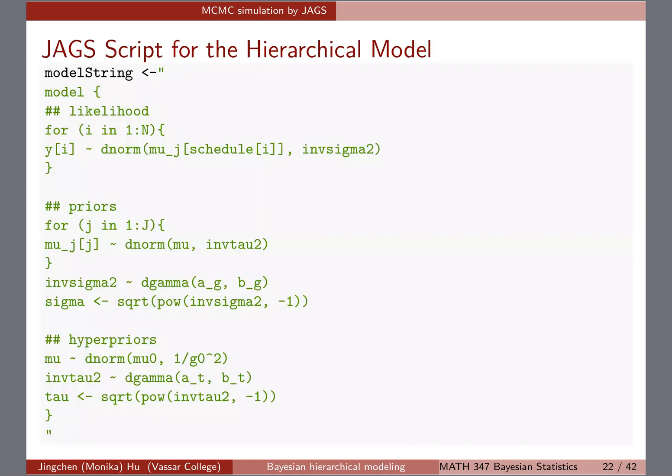So in terms of writing JAGS code, I'm going to pause here for a little bit so you can read through the model strings. So remember, when we're working with JAGS, we write a model string in a sense that we put the script of the model first. We always write the likelihood as part of it as a chunk, the prior as a chunk.